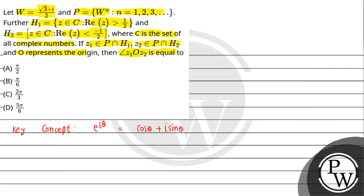Now we can see the value of w. This is equal to root 3 plus iota upon 2, which equals root 3 upon 2 plus iota times 1 upon 2. This can be written as cos(π/6) plus iota sin(π/6), which is e raised to power iota π/6.